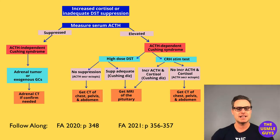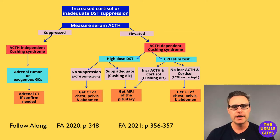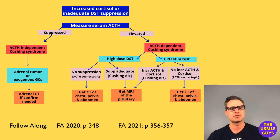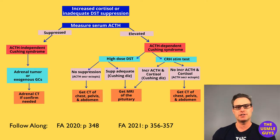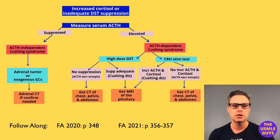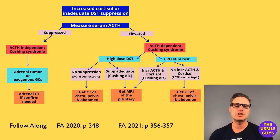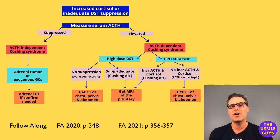Let's look at the flowchart and walk through how we assess a patient using the dexamethasone suppression test. The first step is an identified increase in 24-hour urine cortisol — we can do urine cortisol, salivary cortisol, or the overnight low-dose dexamethasone suppression test — to measure serum ACTH and see if it's suppressed. If suppressed, this indicates ACTH-independent Cushing syndrome due to either exogenous glucocorticoid administration or an adrenal tumor.